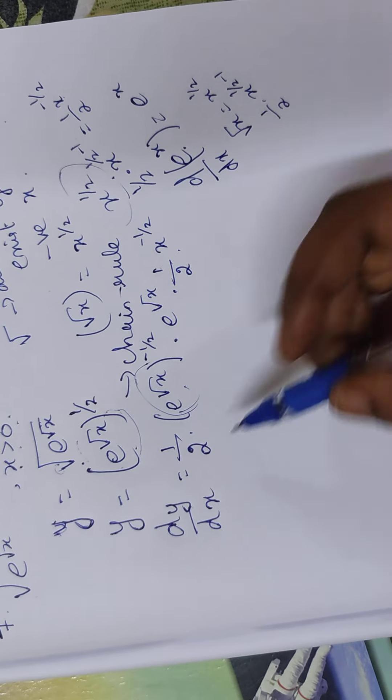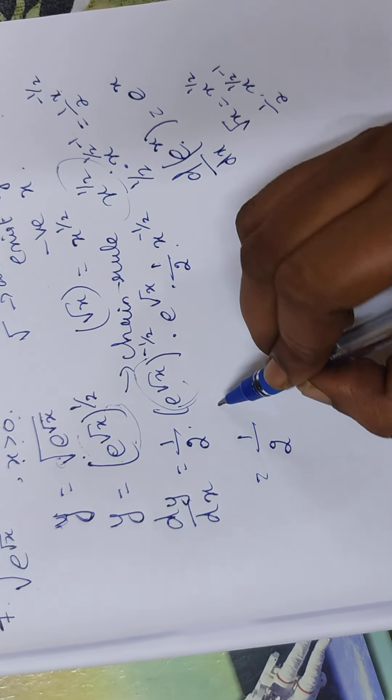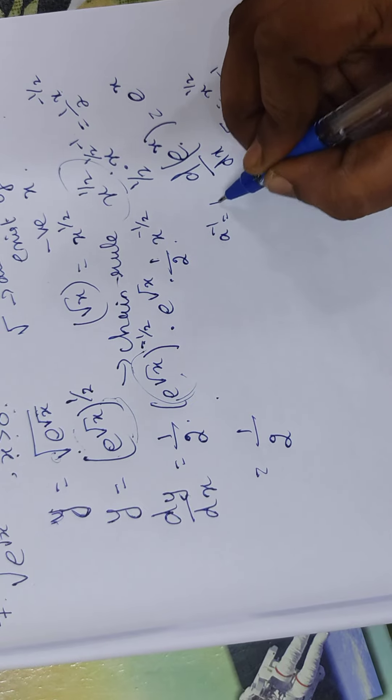1 by 2, this is the power number. 1 by 2, this is the power number, negative power. So a inverse can be written as 1 by a. Correct?